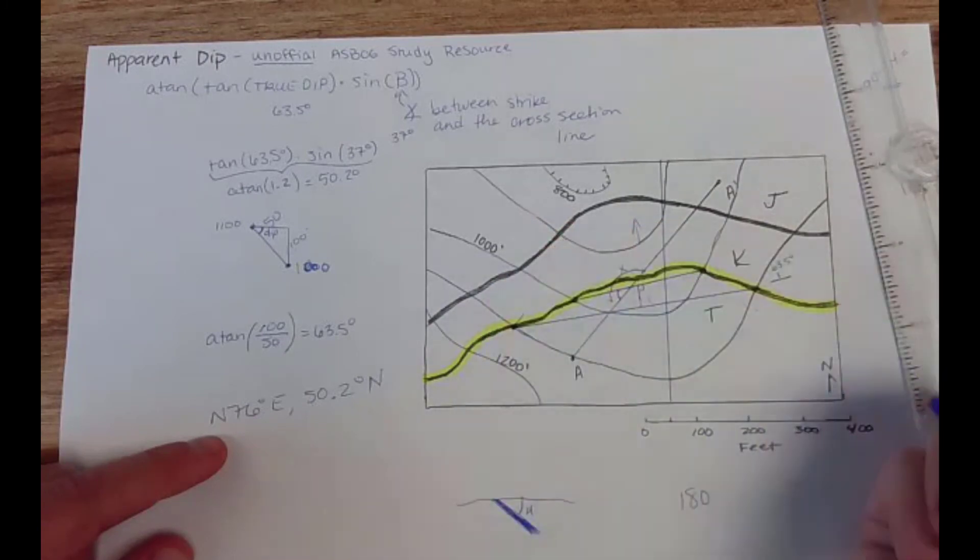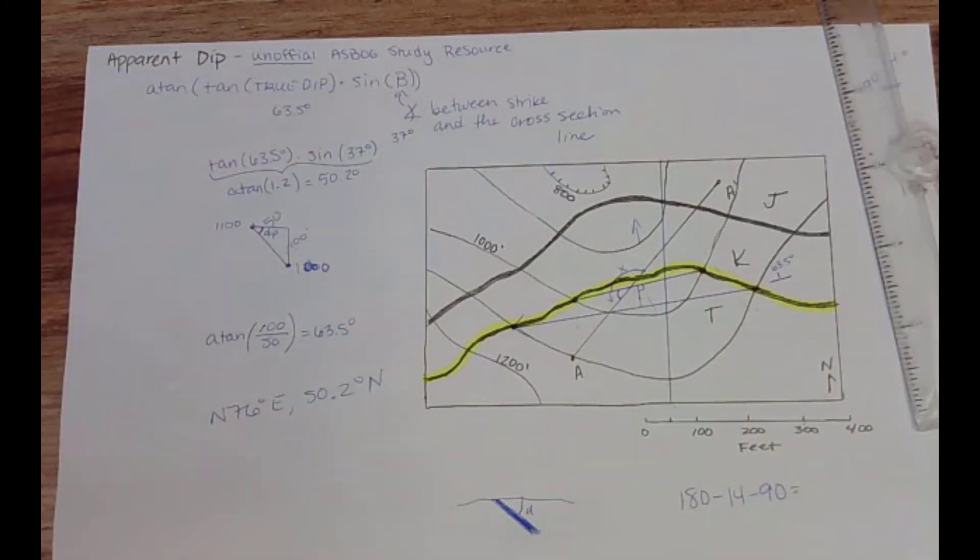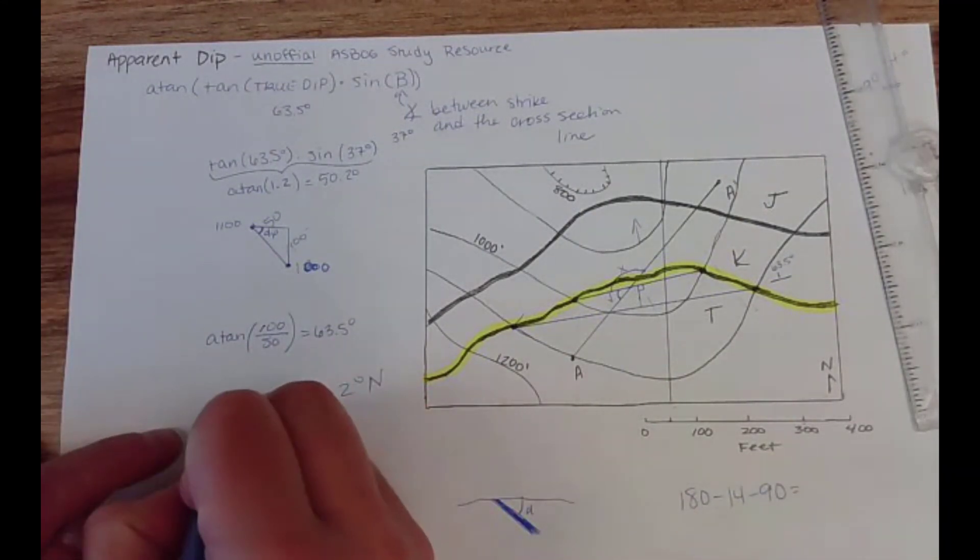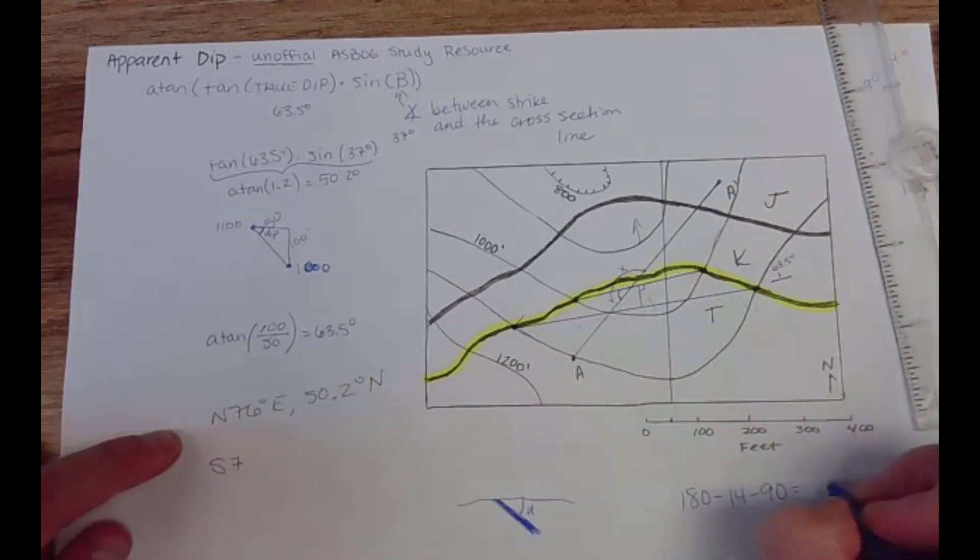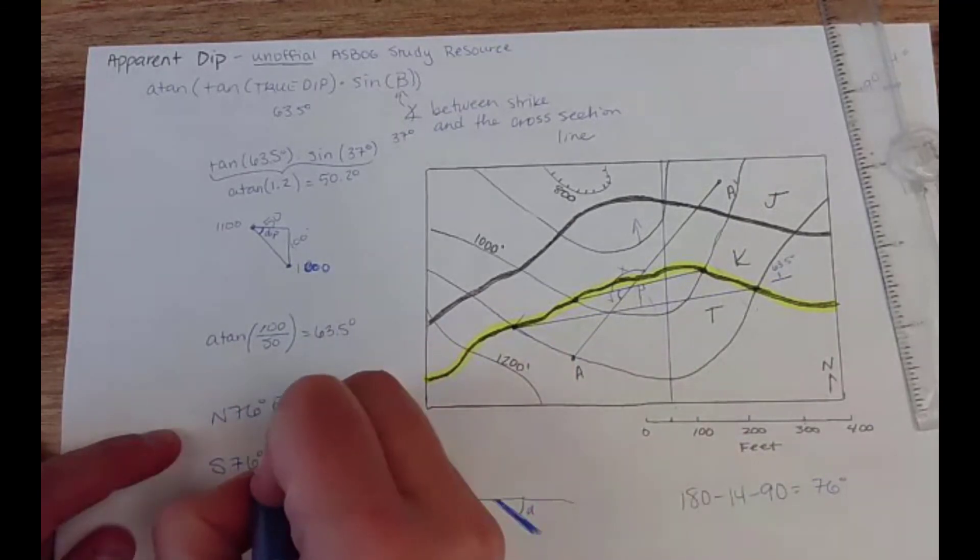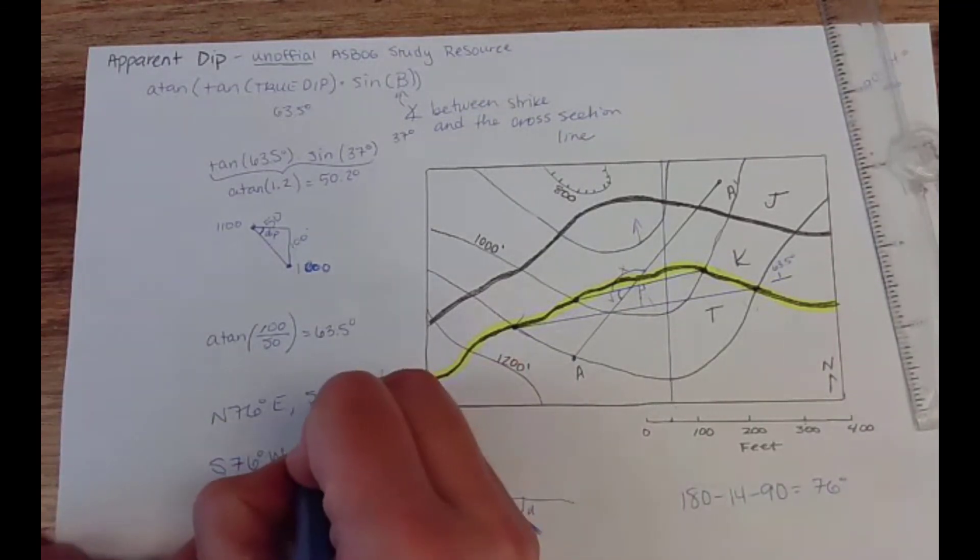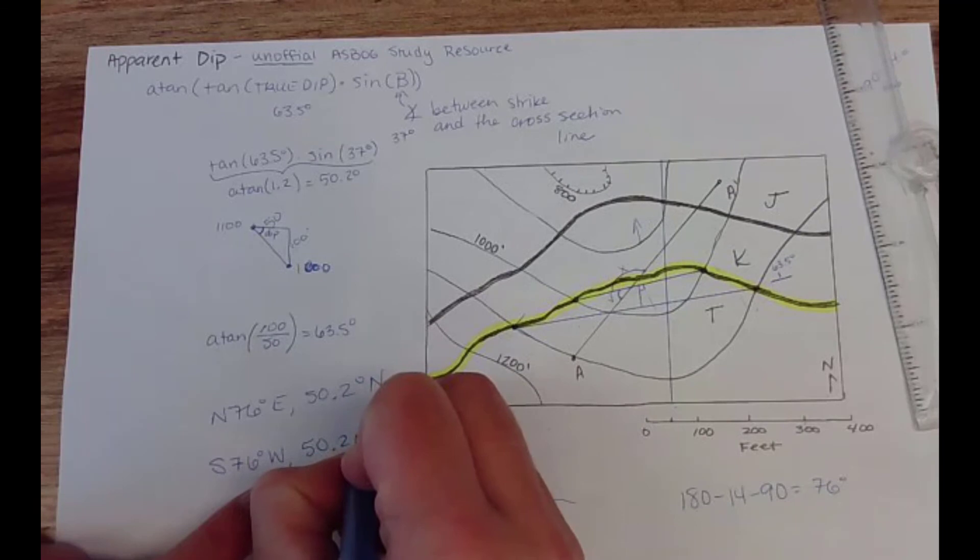So I'm gonna do 180 minus 14 minus 90 and see what I have left, and it is 76. So now it's going to be south 76 west. And maybe that doesn't surprise you but it's always just safe to think through why that exists.